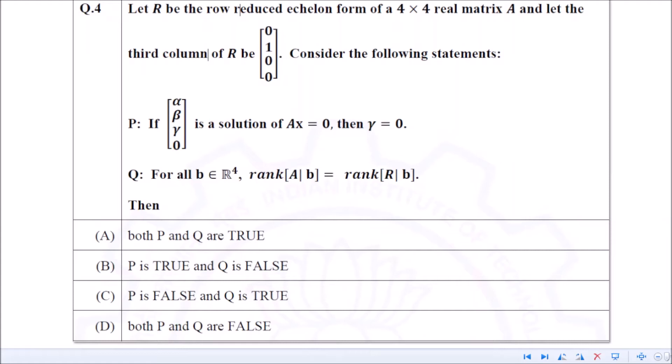You have a row reduced echelon form 4×4 matrix. R is the RREF for matrix A whose third column is given to be [0, 1, 0, 0]. Other entries can be anything, but R has to be in row reduced echelon form.